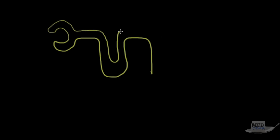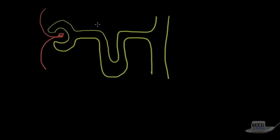Let's look at sodium and water concentration. Drawing the glomerulus with the proximal convoluted tubule, loop of Henle, and collecting tubule: in a pre-renal situation there's not enough blood coming into the kidney and GFR is reduced. The kidney thinks there's not enough volume, so it responds by reabsorbing more sodium.